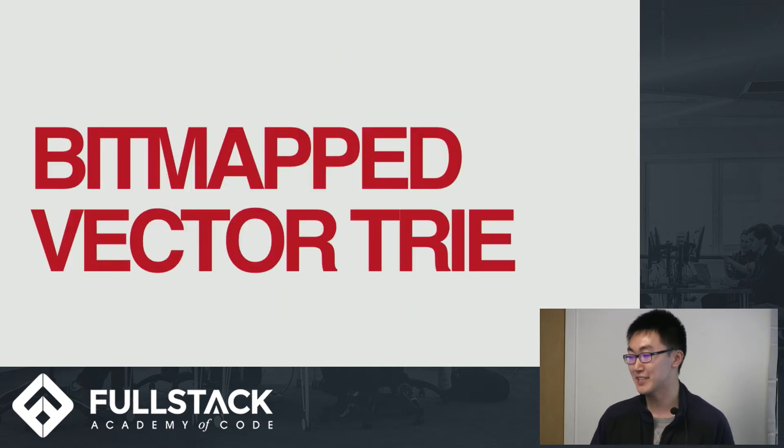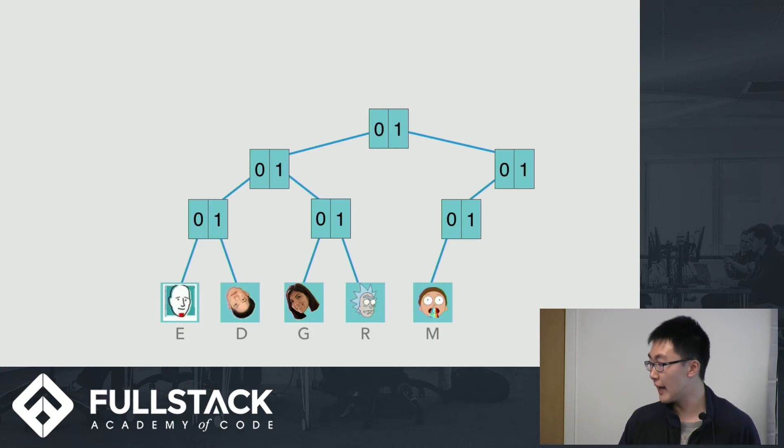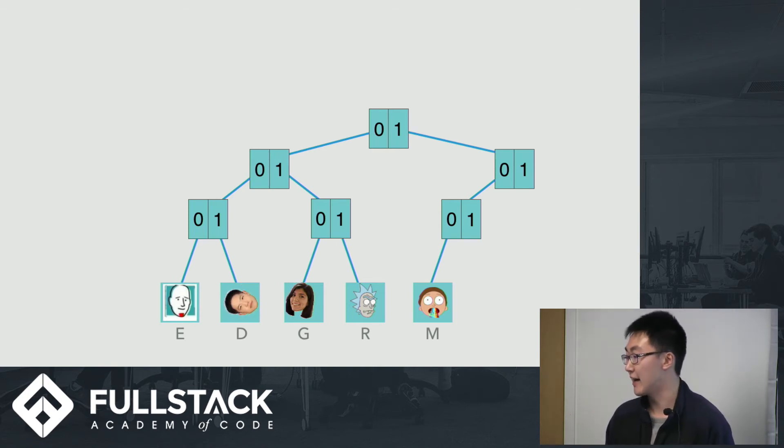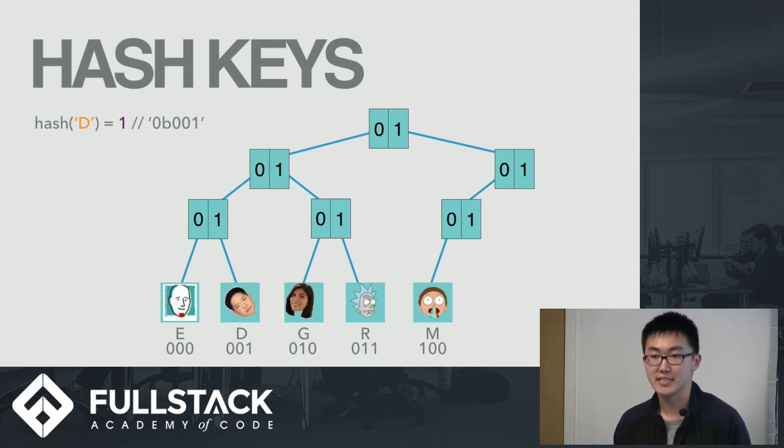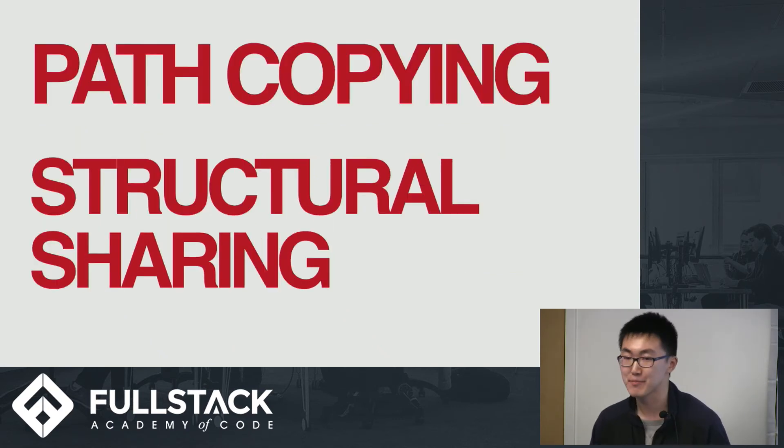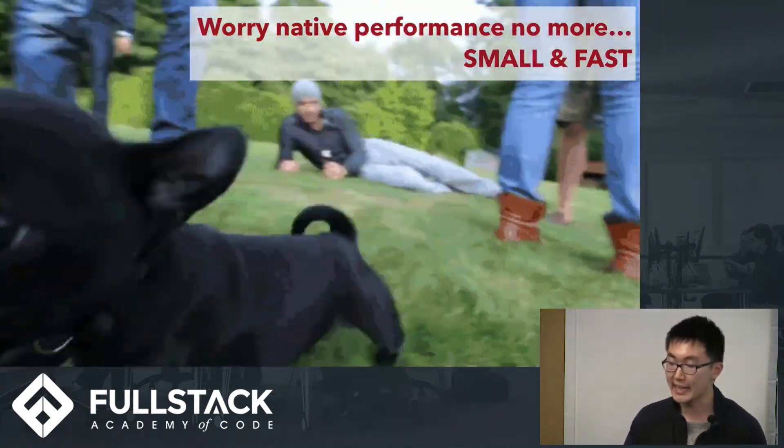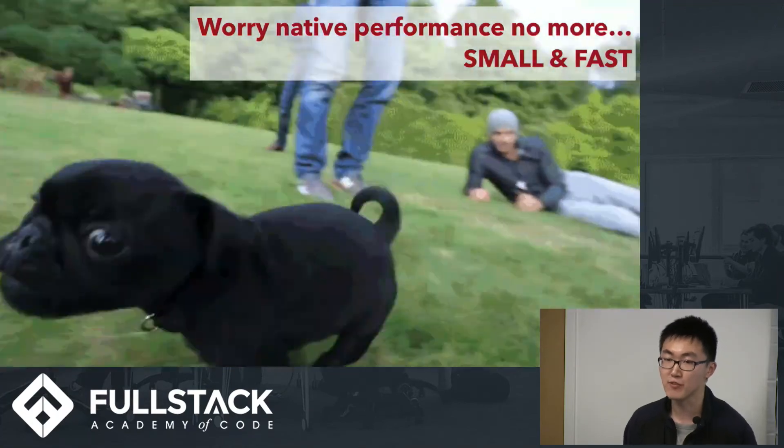So the data structure I just showed you is called a bitmap vector trie, which is the array-like immutable data structure. But what about objects? Objects don't use numbers as indexes. They use keys, and keys can be like anything. And so we'll have something like this. So instead of using numbers, each person here will now use their initials as their keys. So we'll have E for Eric, D for David, and so on. And what we do then? The solution is also pretty simple. We just hash the keys. So for example, if you have a hashing algorithm that can hash the letter D into the number one, then we can use the binary representation of one, which is 001 to traverse down the tree, and we'll get to David. And this data structure is called a hash array mapped trie, which uses the same path copying and structural sharing techniques that the array-like immutable data structure used to gain performance. And this way, we can actually have immutable arrays and immutable objects that have a very small performance overhead in terms of time and space. So we actually have something to use in production.